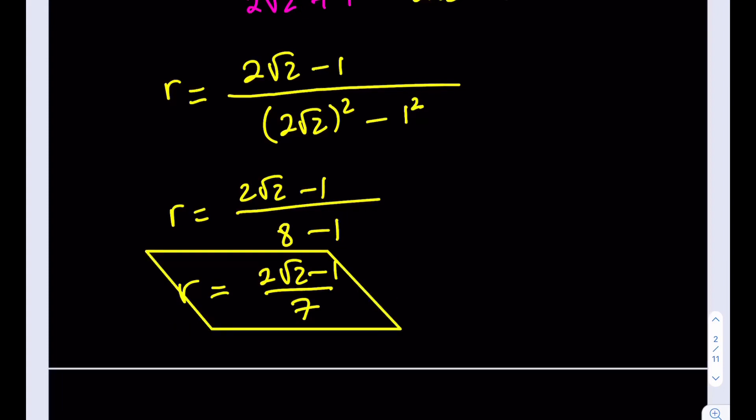If you're wondering what this result looks like numerically: √2 is about 1.4, so 2√2 is about 2.8. Subtract 1 to get about 1.8, then divide by 7 to get approximately 0.26. Thank you for watching — please comment, like, and subscribe, and see you in the next video. Have a good one!